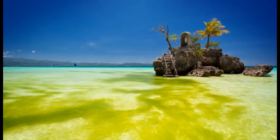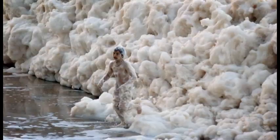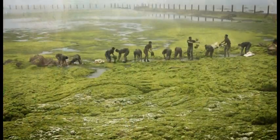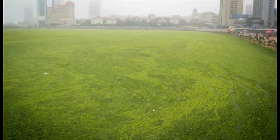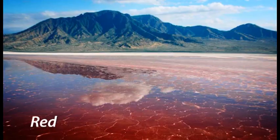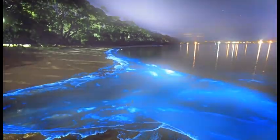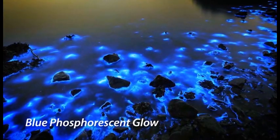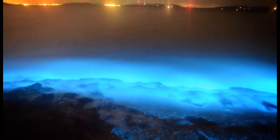Highly dense algal blooms can form streaks or slimy scums, foams, or grow in clumps and form thick mats that float and appear as discolored surface waters, ranging from white, green, yellow, red, or brown hues. At night, some algal blooms can also be seen as blue phosphorescent glows produced when bioluminescent algae are disturbed.